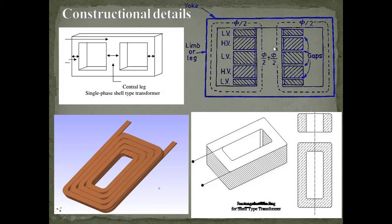Both the HV and LV windings are wound on the central limb in shell type transformer, and it is sandwich type — meaning HV and LV are alternatively placed. This is the cut section elevation of a single phase shell type transformer. We have three alternate LV and HV layers, and between the windings there are gaps for insulation, including a gap between the windings and the limb.